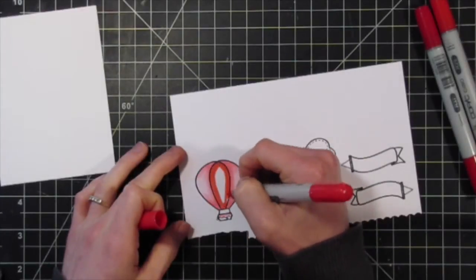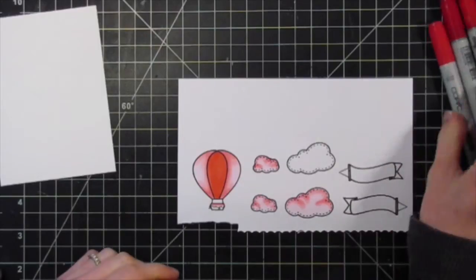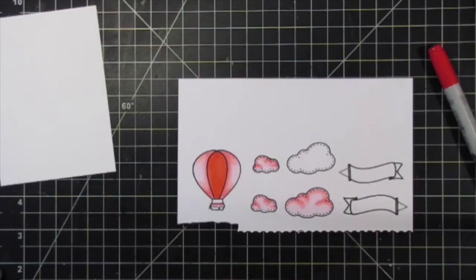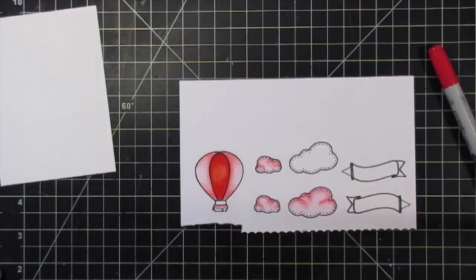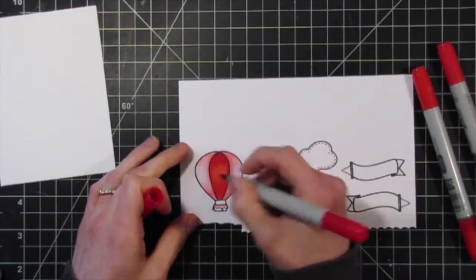Now I'm moving on to the next part of the balloon, starting with R35 as my base coat. Next I'll be taking R29 as the mid-tones and then R37 as the darkest, and I'll blend that all out with the red.